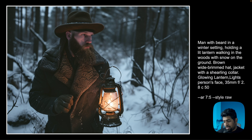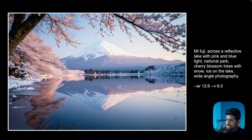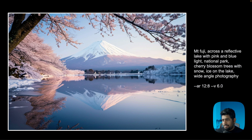With v6, anything and everything you put in the prompt is considered when generating images, making it probably the best text-to-image solution available. Here's a Mount Fuji example — Mount Fuji with a reflecting lake, pink and blue light, cherry blossom trees. The specific detail that really stands out: I asked for ice on the lake, and you can actually see ice in the corners and edges of the lake. It takes into account very specific details added to the prompt.